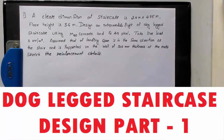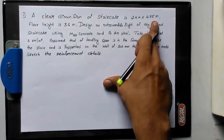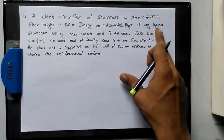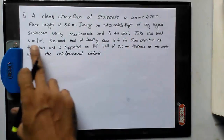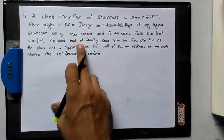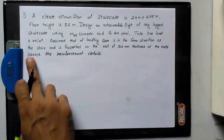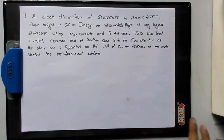Hi friends, welcome to Globe Make. Today I am going to show you how to design a dog leg staircase. The problem gives a clear dimension of the staircase as 2.4 m × 4.75 m, floor height is 3.6 m. Design an intermediate flight of a dog leg staircase using M20 concrete and Fe415 steel. Live load is 3 kN/m². Assume the landing span is in the same direction as the flight and is supported on a 300 mm thick wall at the ends. Sketch the reinforcement details.